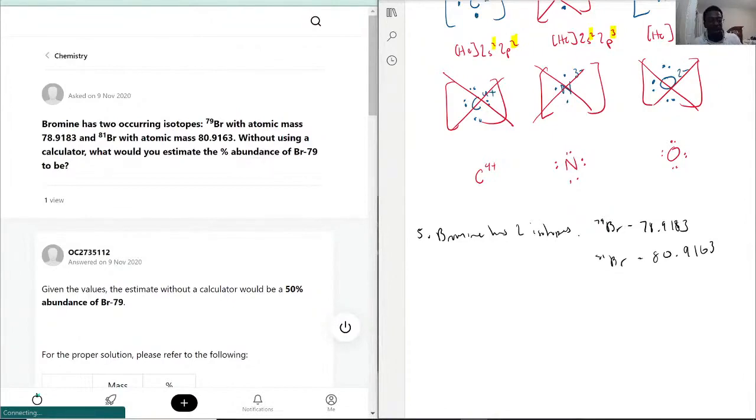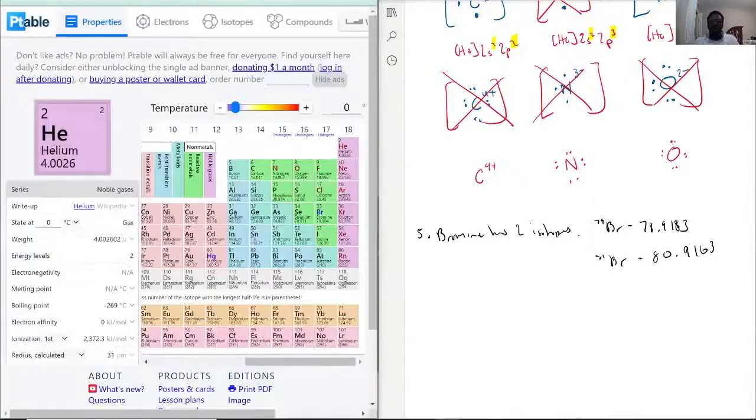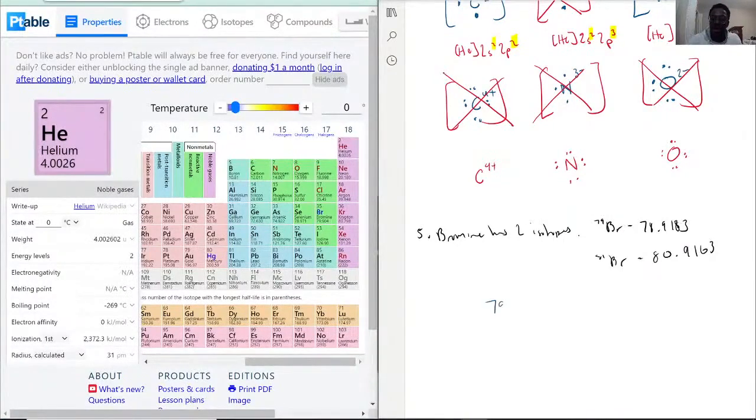So let's see here. If you look at the periodic table, the actual molar mass for bromine is 79.904, so almost like round up to 80.